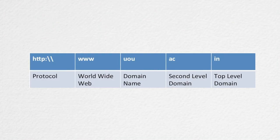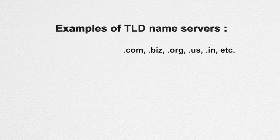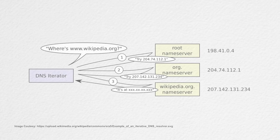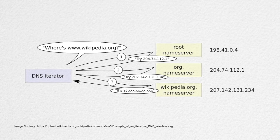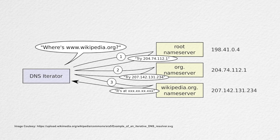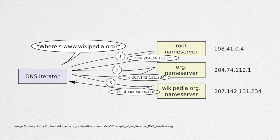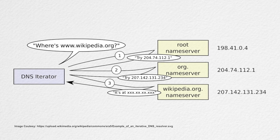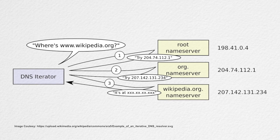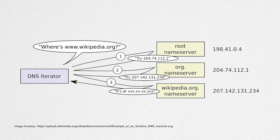Some examples of TLD name servers are .com, .biz, .org, .us, .in, etc. These TLD name servers act as a switchboard and direct the query to the appropriate authoritative name server maintained by each domain. The authoritative name server maintains DNS records along with other useful information. This address record is returned back to the requesting host computer via the name server and ISP DNS server. Intermediary servers keep the record of this IP address in their DNS cache so that if the same request is encountered again, they don't have to go through this process again. If the same URL is requested again, the DNS cache of the local host computer will return the IP address of the URL.